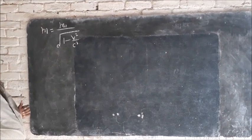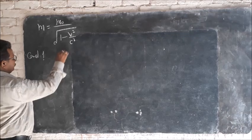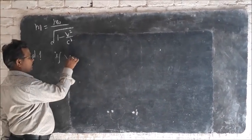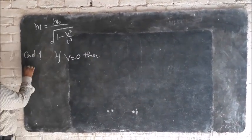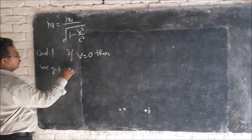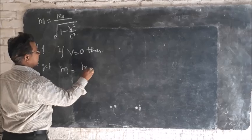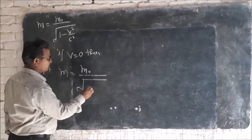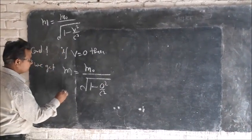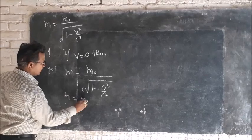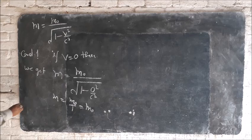Now take condition 1: if the velocity of the object becomes 0, then we get that the moving mass equals rest mass upon the square root of 1 minus 0 squared upon c squared, that is moving mass equals rest mass upon 1, that is rest mass. This condition is perfect.